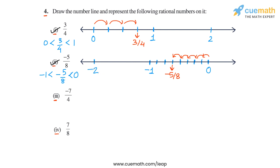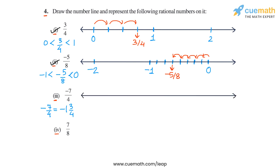Now coming to part 3, we have to plot minus 7 by 4. We note that minus 7 by 4 is negative, and its magnitude 7 by 4 is more than 1 but less than 2. In fact, you can write minus 7 by 4 in mixed fraction form as minus 1 and 3 by 4, and from here you can see that minus 7 by 4 will lie between minus 2 and minus 1. So let's plot it using this observation.